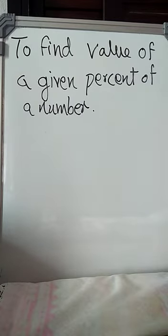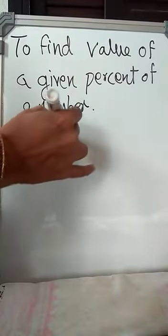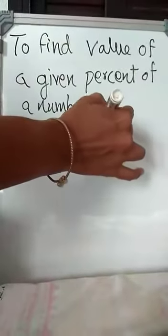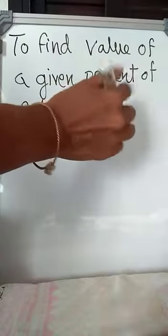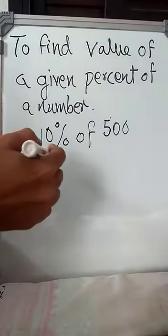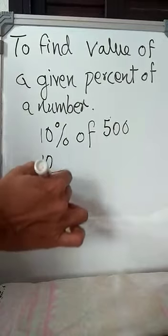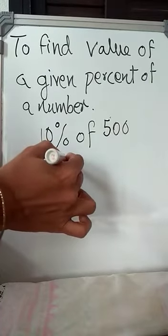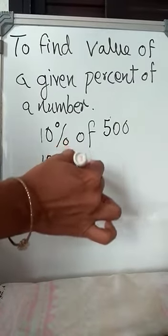So let us consider an example. They are telling that 10% of... If you are asked what is 10% of any number, so here in the example it is 500. How will you find the term? 10% of 500 you will write as 10 by 100, of you will write as into, means multiplied by 500.